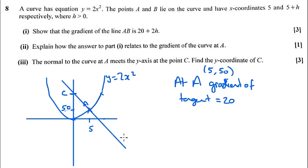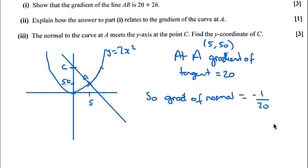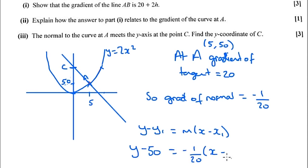So that means we can write down the gradient of the normal. And that's going to be the negative reciprocal, so negative 1 over 20. And we know a point on the line, so we can do y - y₁ = m(x - x₁) to get the full equation of the line. So that's going to be y - 50 = -1/20(x - 5).